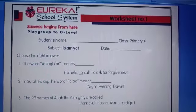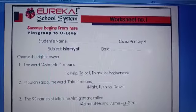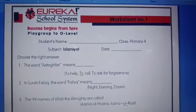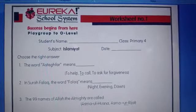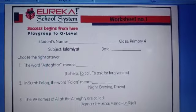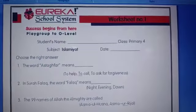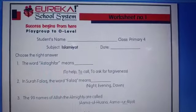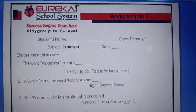Assalamualaikum everyone. Today in Primary 4 we have done the reinforcement worksheet. Choose the right answer. Number one: the word 'astagfar' means — to help, to call, or to ask for forgiveness. The answer is to ask for forgiveness. Number two: in Surah Falak, the word 'falak' means — night, evening, or dawn.